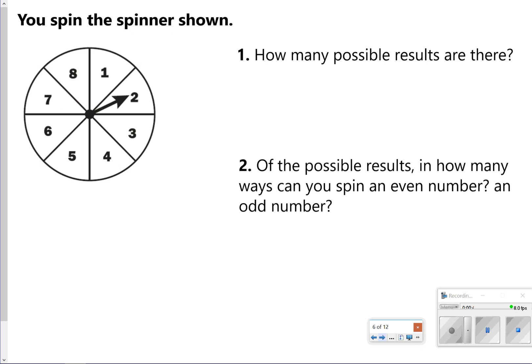All right, so some examples you might see here is you're going to be given a spinner or marbles or a number cube, and you have to decide what results are there. For this case, there are eight possible results, and it says of the possible results, in how many ways can you spin an even number? Even numbers are going to be 2, 4, 6, and 8, so I'm going to be able to spin four ways for an even number. And then I'm also going to be able to spin four ways for an odd number.